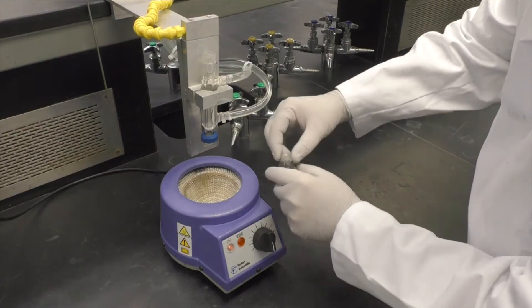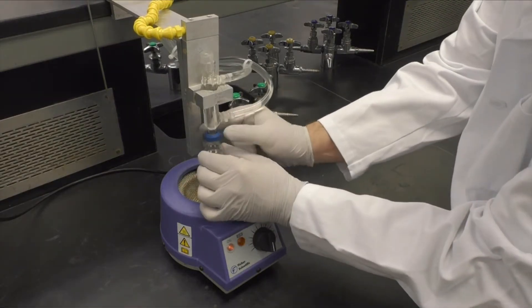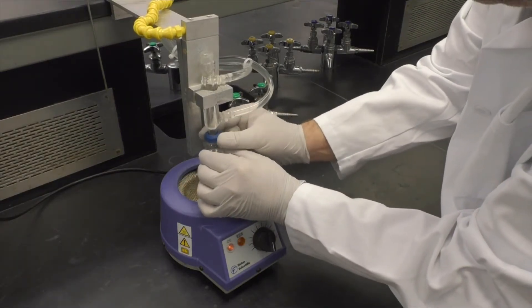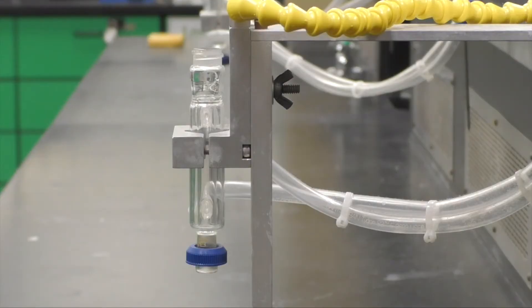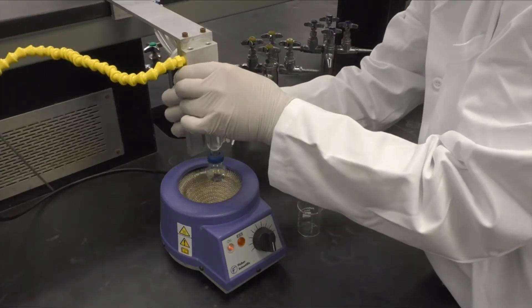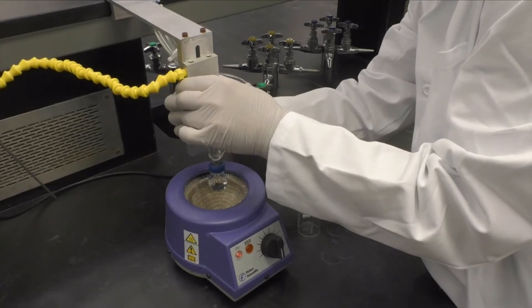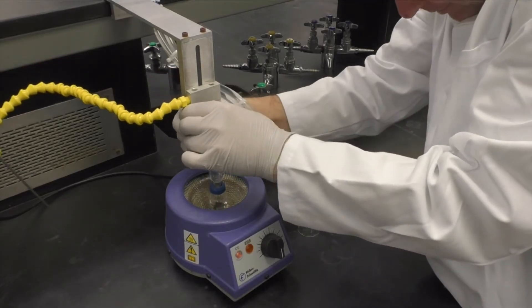Attach your flask to the condenser using the blue ring attached to the condenser setup. Loosen the wing nut on the back and position the flask so that the bottom of the flask is about a half an inch from the bottom of the heating mantle.